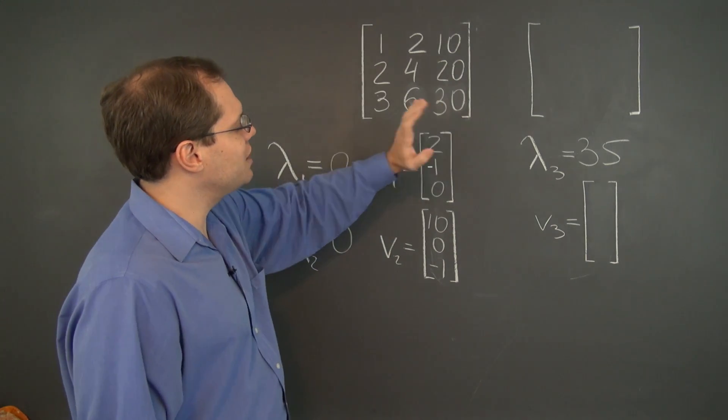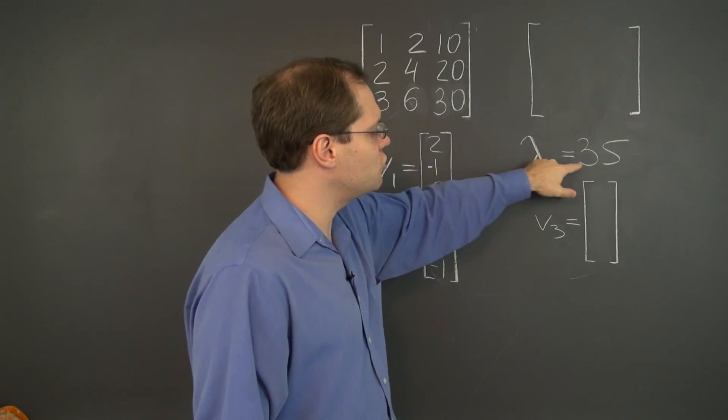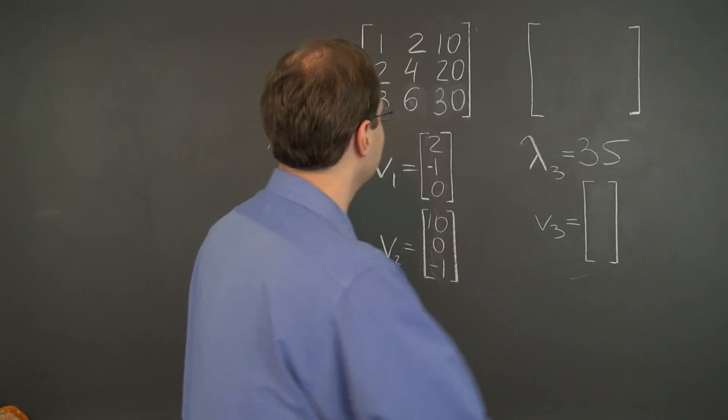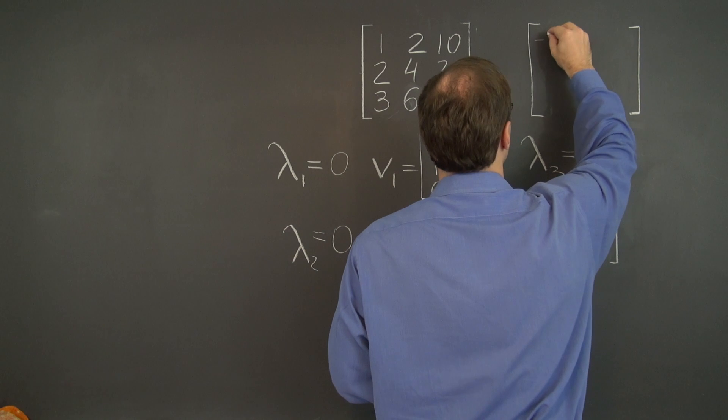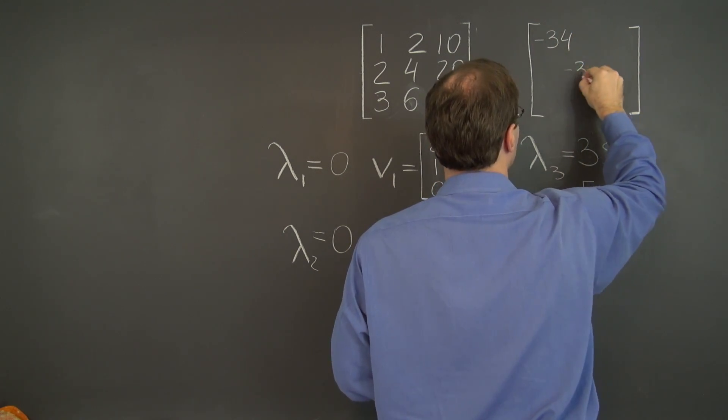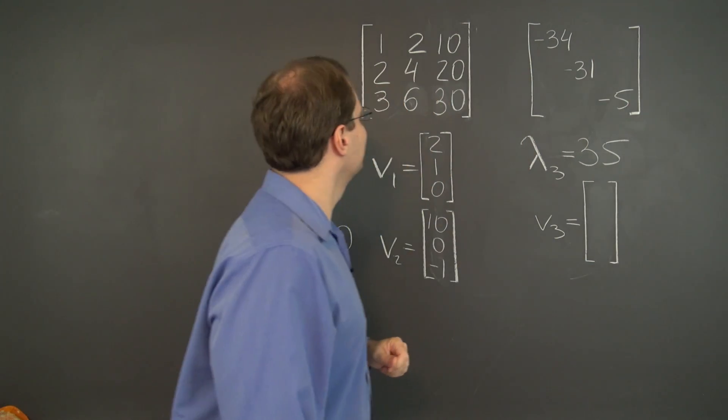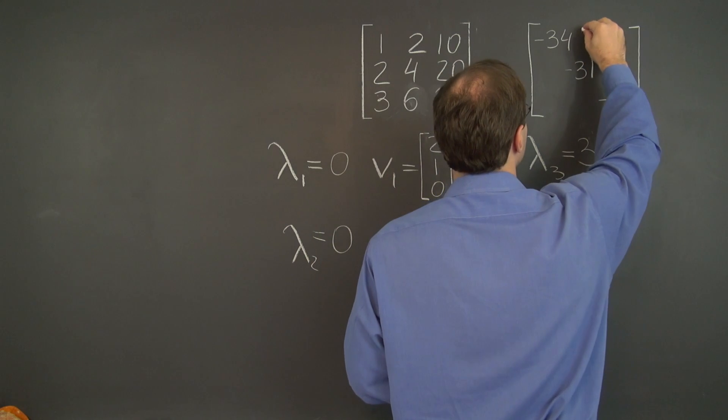Although with this 30, I'm not sure what I'm getting myself into, but let's just see what happens. So we have to subtract 35 from all the diagonal entries. So we end up with negative 34, negative 31, and negative 5.